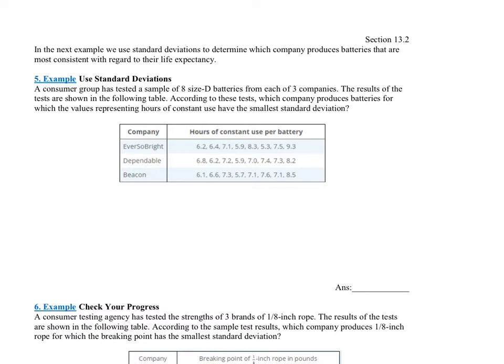Okay, so let's read this. It says, in the next section we use standard deviation to determine which companies produces batteries that are more consistent with regard to their life expectancy. So again, we're going to a real-world example. In a real-world example, the majority of real-world examples, you want small distributions. You want everything really accurate, everything really close to that mean.